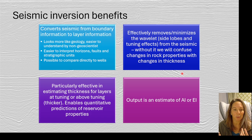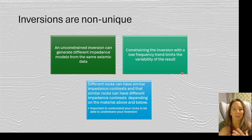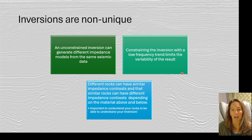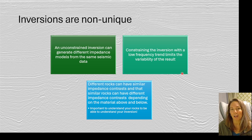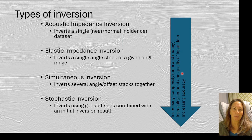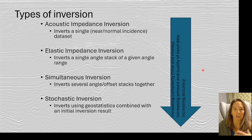The output we get is usually some sort of impedance, whether acoustic or elastic. One thing to keep in mind is that inversions are not unique — an unconstrained inversion can generate many different impedance models from the same seismic data, which is why we include the low-frequency trend in the inversion. Also, different rocks can have similar impedance contrasts, so acoustic impedance inversion doesn't necessarily tell us exactly what our rocks are — we're looking at relative or absolute acoustic impedance, not definitively sand versus shale, though we can do that when we have well log information. There are different types of inversion available — think of these as tools in your toolbox to match the goals of your seismic investigation.